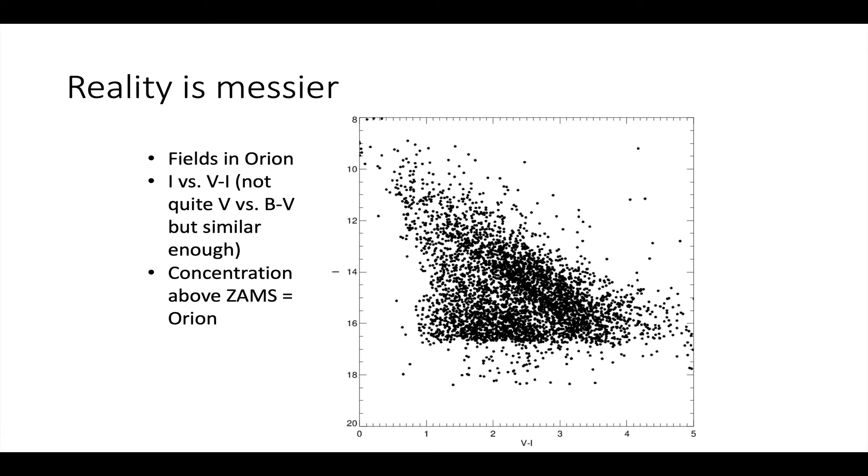This is going even further into the messiness of reality. Here on the y-axis, I have I band, and the x-axis, I have V minus I. You can kind of see that there's a gap here, right? So this is field stars, and this is Orion. I'm looking at a region, a star forming region, where because of where I've pointed the telescope, an awful lot of what I'm seeing in that image are actually members of Orion.